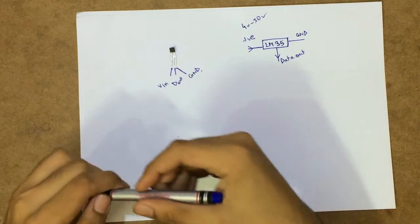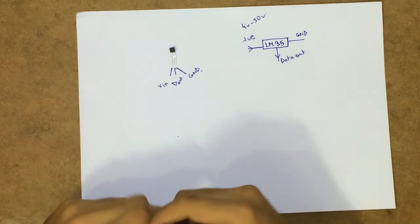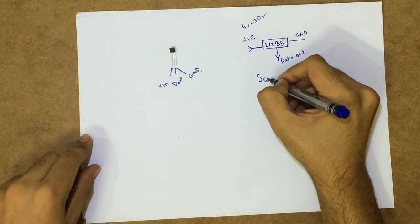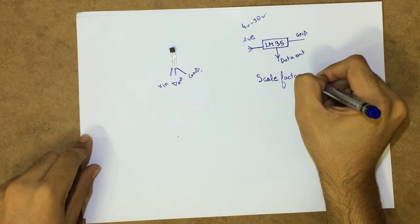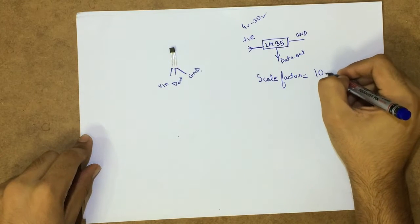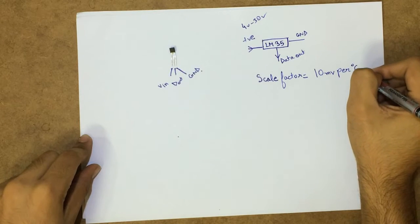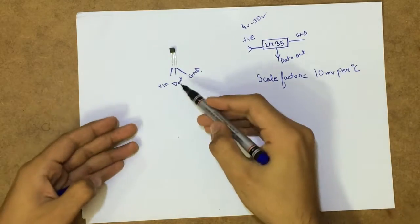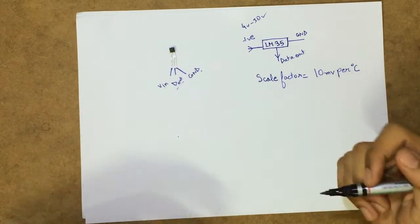Now some specs of this thing, for the nerds I guess. The scale factor of this device is 10mV per degree C. So the voltage output, the data output would vary from 10mV when 1 degree C of the temperature rises.